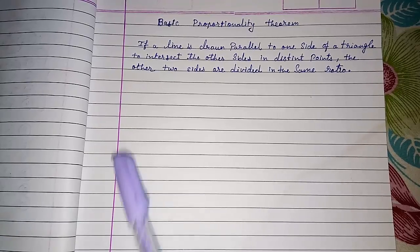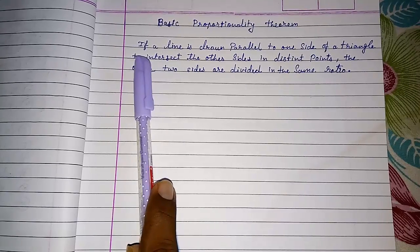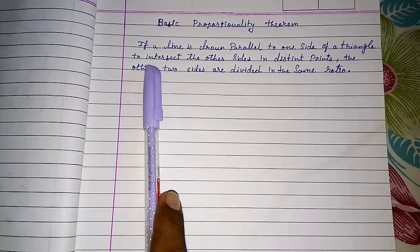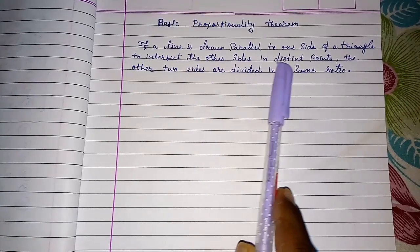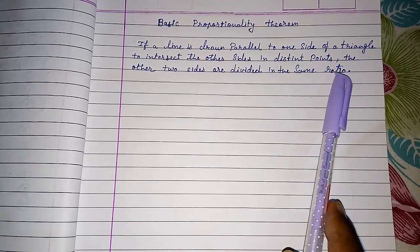Hello friends. Today we are going to study about basic proportionality theorem. If a line is drawn parallel to one side of a triangle to intersect the other two sides in distinct points, the other two sides are divided in the same ratio.